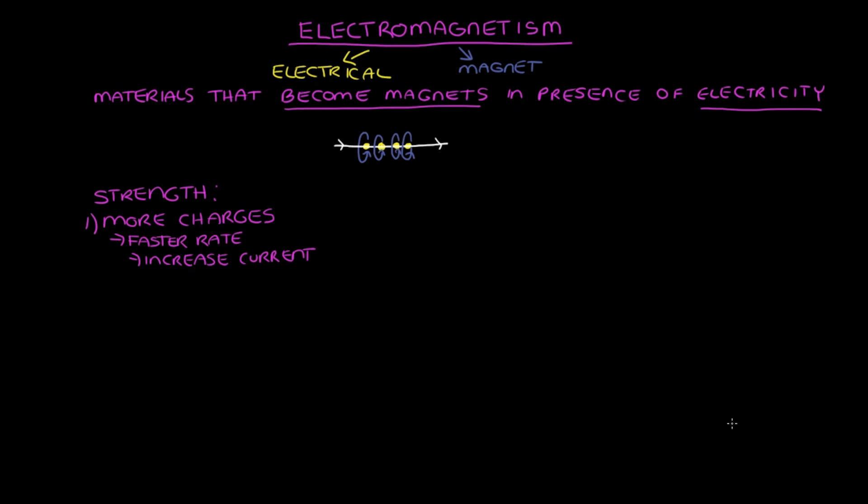The second way is to increase the density of the charged particles, and we can do this by looping the wire into a coil. This gives us more charged particles with magnetic fields in a small space, strengthening the magnetic force.